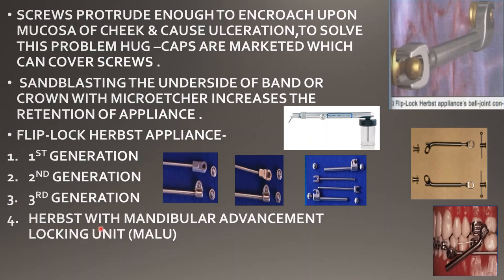The last modification is the Herbst with a Mandibular Advancement Locking Device, known as MALO. In this appliance, the upper arch has only the molars banded with a headgear tube. If there is over-expansion, a palatal arch can be used. In the lower arch, the first molars are banded, and the anterior segment from cuspid to cuspid is bonded with brackets. The bicuspids may be left unbracketed to help in settling the occlusion and locking of the device.